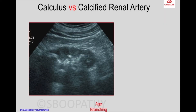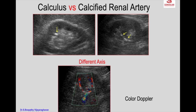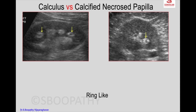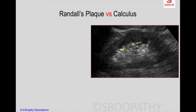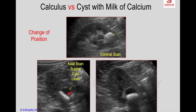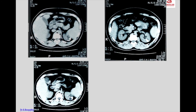A calculus can be mimicked by calcified structures. You can apply color Doppler. Within the calcified papilla, calcification forms on the surface, so it appears ring-like — this is the history of calcification. Randall's plaque versus calculus: you can see multiple bright spots in the kidney. In axial scan in left lateral decubitus, the milk of calcium shifts its level according to the position of the patient, confirming that it is a cyst with milk of calcium.